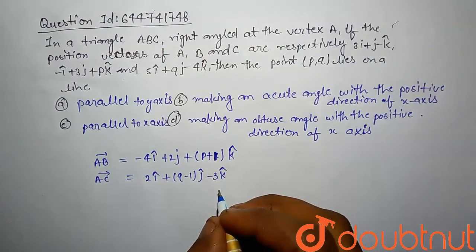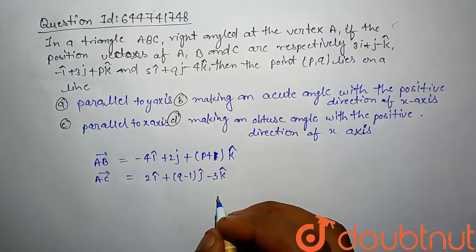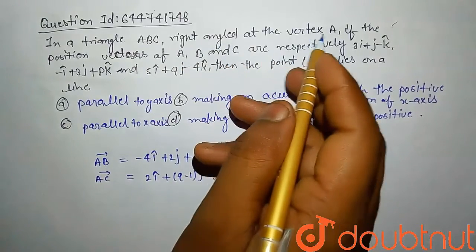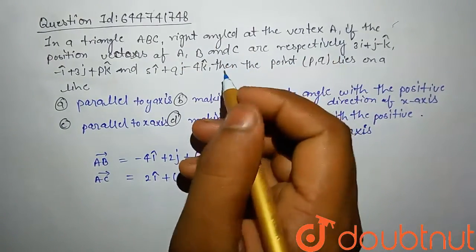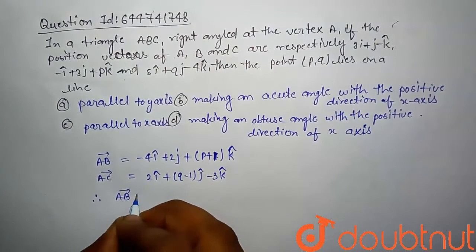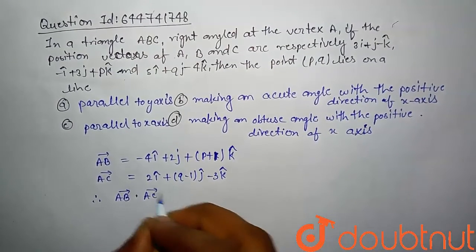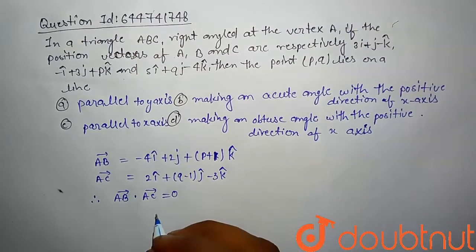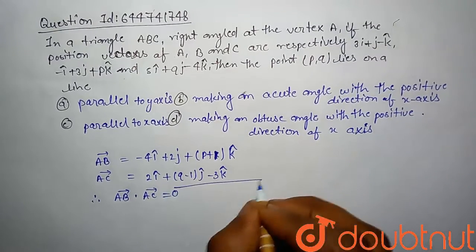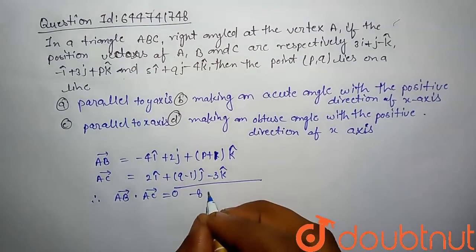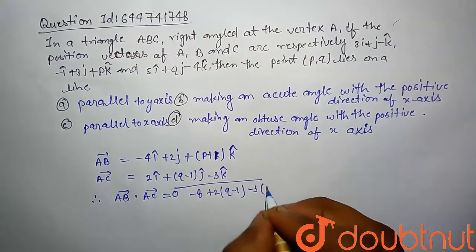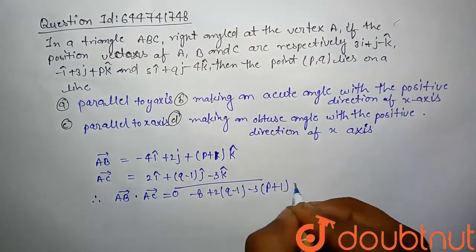Since the triangle is right angled at vertex A, vector AB dot vector AC must be 0. Computing this dot product: -8 plus 2 times (q-1) plus -3 times (p+1) equals 0.